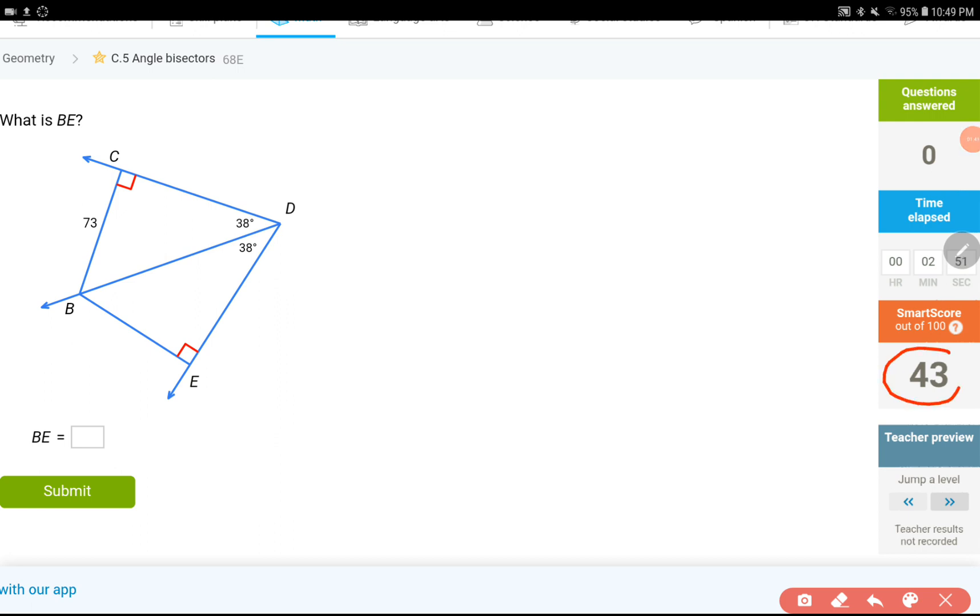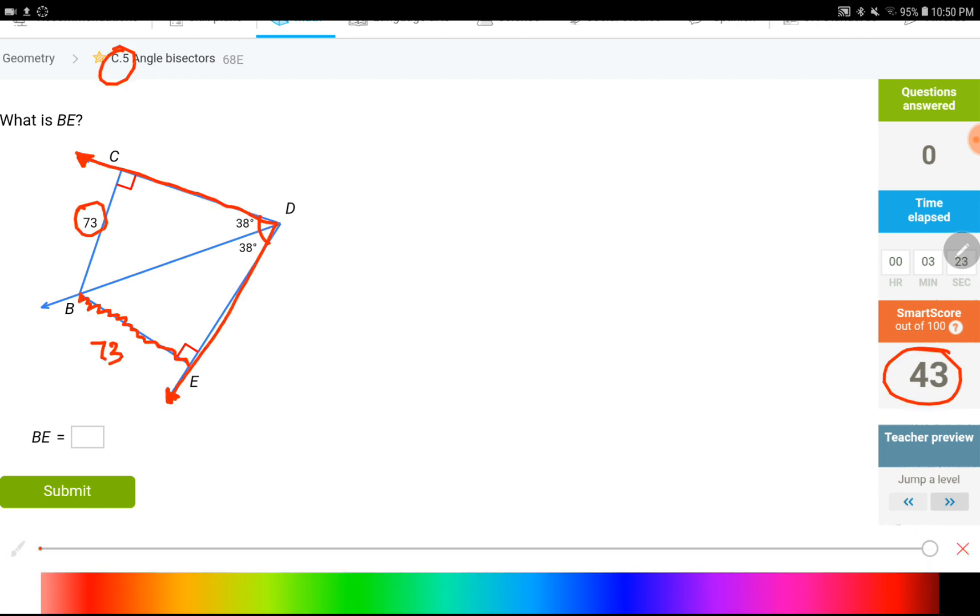Okay, here is what happens when you hit kind of 40, 45 on C5. What is the length of BE? BE is right here. A wild guess would be it would be equal to 73, but let's see what the question is about. It is about an angle bisector right here. 38 degrees and 38 degrees. They go on forever to this way and that way. And we have perpendicular sides coming towards these two, like BE and BC.